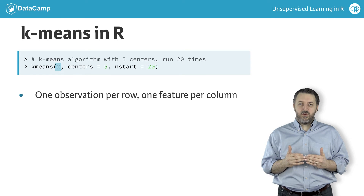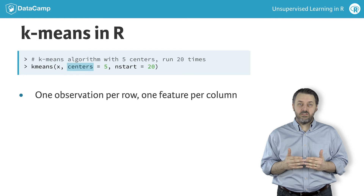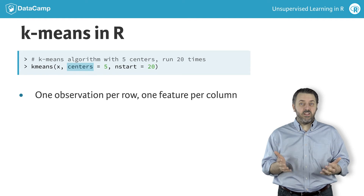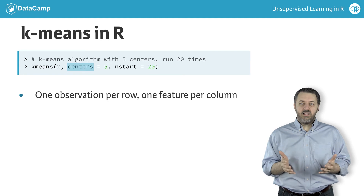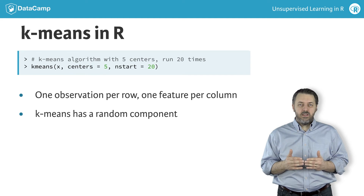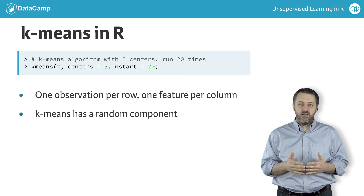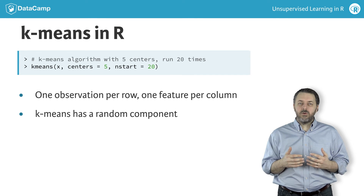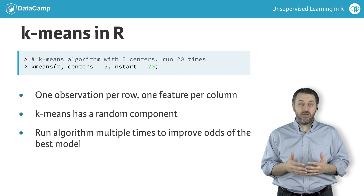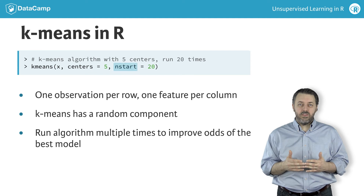The next parameter for K-means is the number of predetermined groups or clusters. This parameter is called centers, for reasons that will be covered in the next video. Finally, the K-means algorithm has a random component. The implication of this stochastic component is that a single run of K-means may not find the optimal solution. To overcome this, K-means can be run multiple times, with the best outcome across all runs being selected. The nstart parameter specifies the number of times K-means will be repeated.